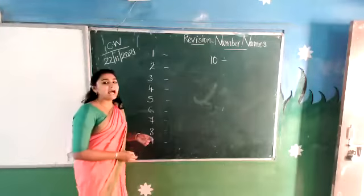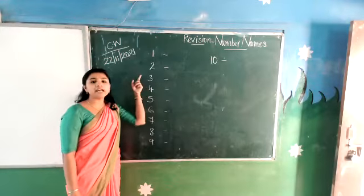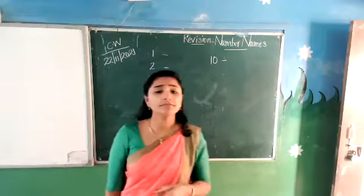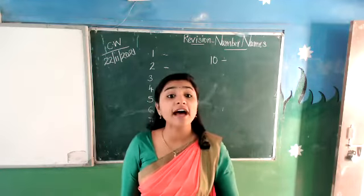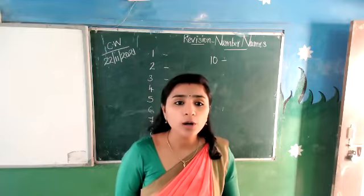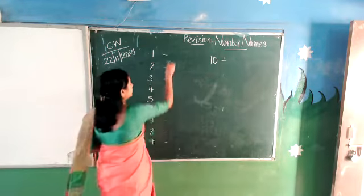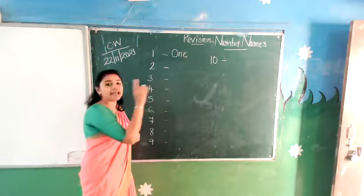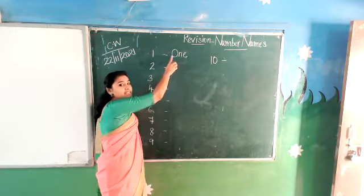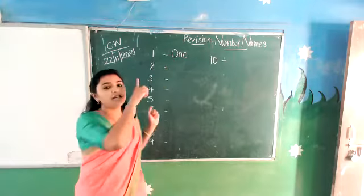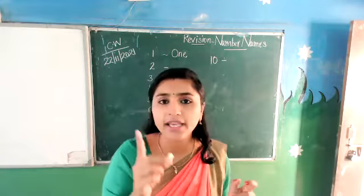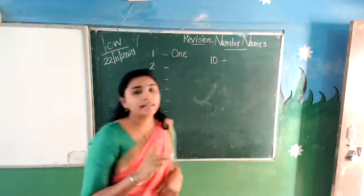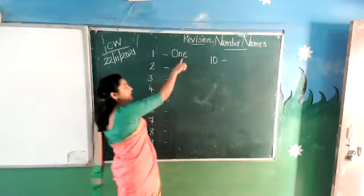So we will start with the first number, that is number 1. What is the spelling of number 1? All of you say — what is the spelling of number 1? O-N-E. And as you know, the first letter should be written in uppercase, which means capital letter. O-N-E — 1.